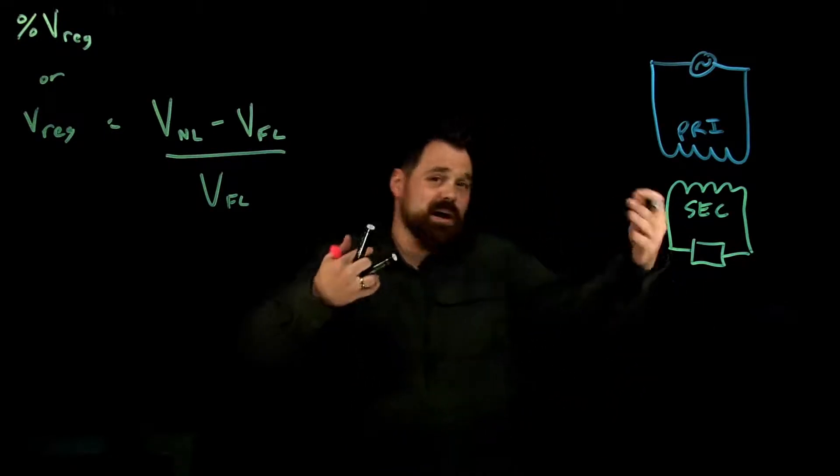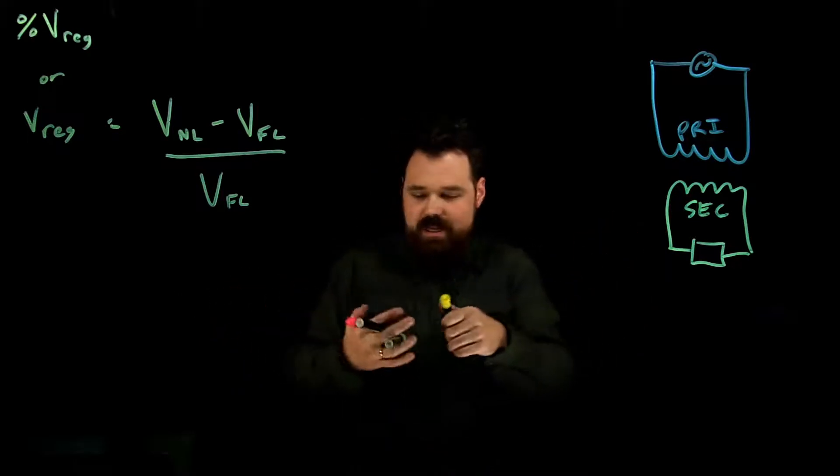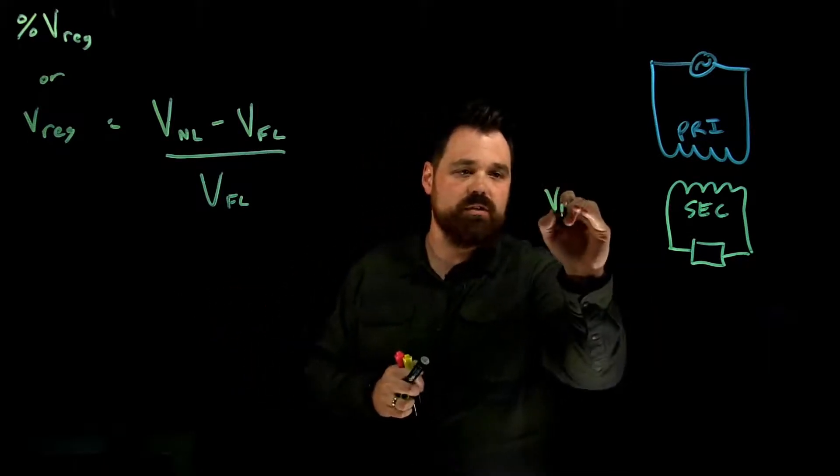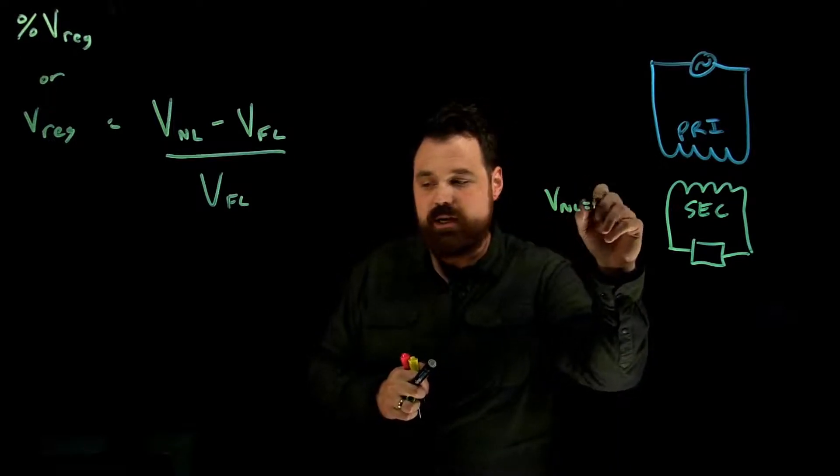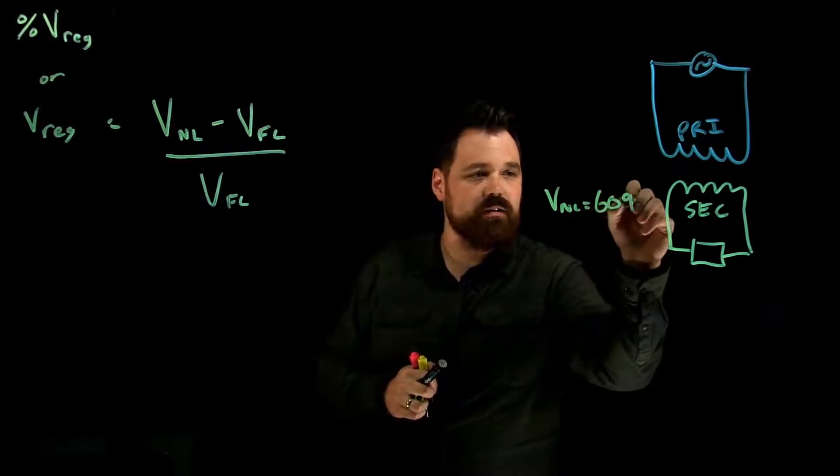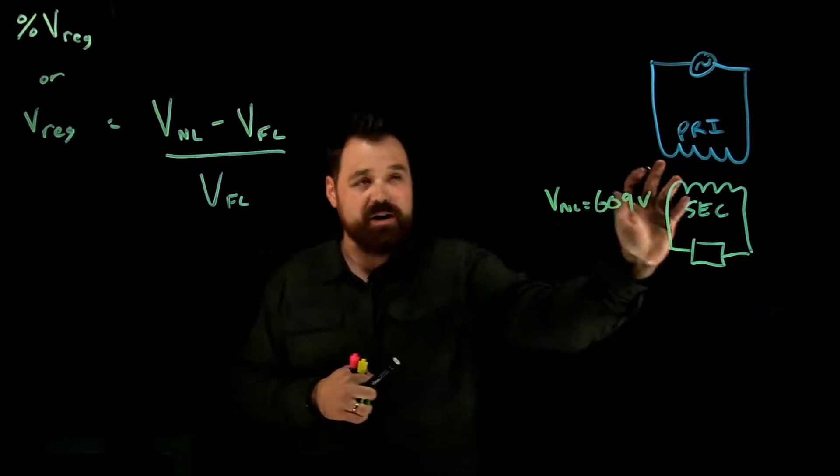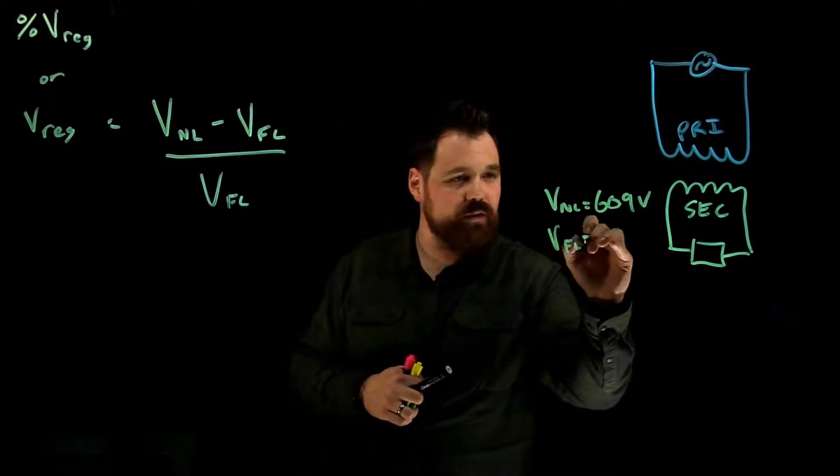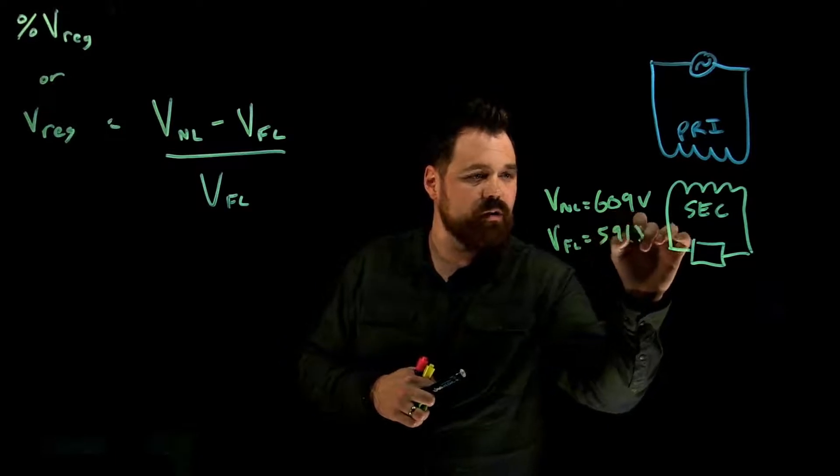So in this case, we would have to know our voltages. Let's say that this transformer here has a volts no load of 609 volts on the secondary, always that secondary voltage, and a volts full load of 591 volts.